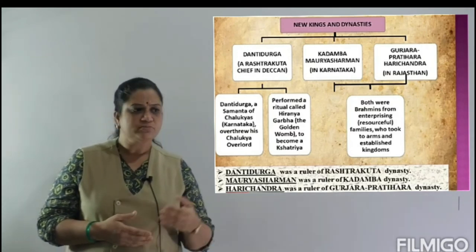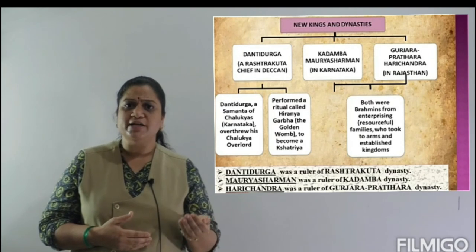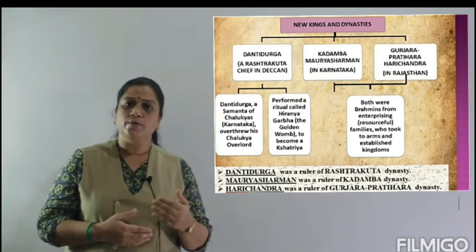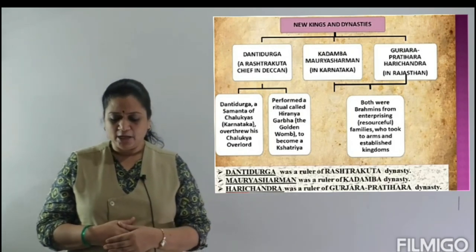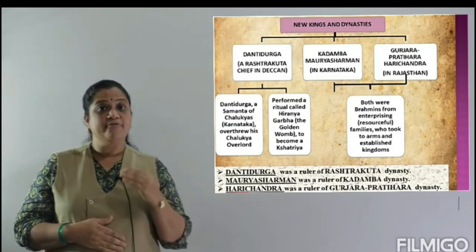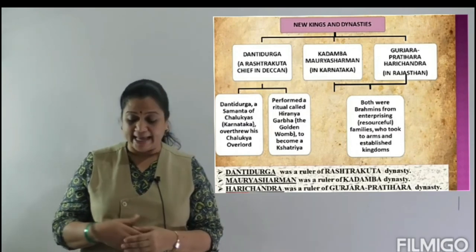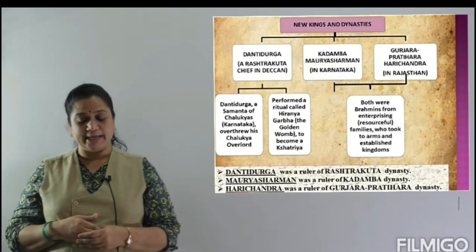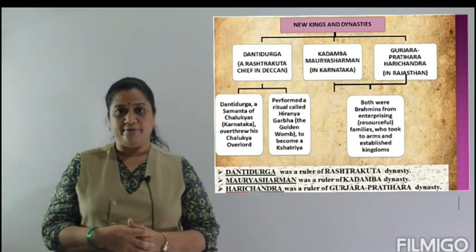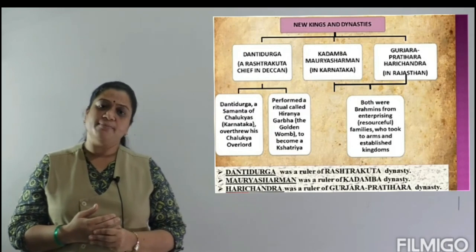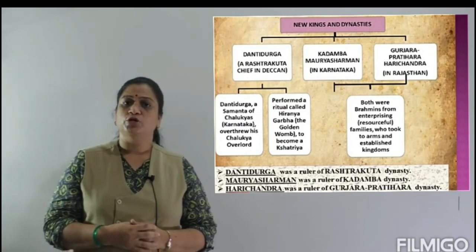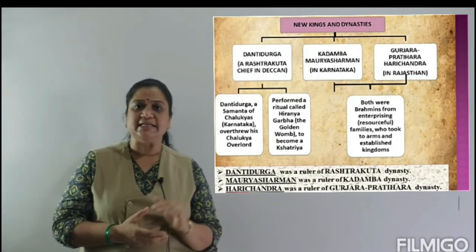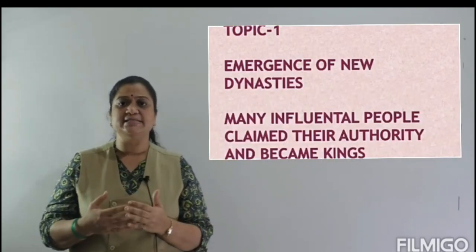We have examples of Vaishyas — traders — and even Brahmanas who ruled kingdoms. For instance, the Kadamba Mayurasharman and the Gurjara-Pratiharas were Brahmanas who gave up their traditional professions and established kingdoms in Karnataka and Rajasthan respectively. After the 7th century, in the medieval period, many new dynasties emerged. Today we have covered the first topic: the emergence of new dynasties and how they emerged in the Indian subcontinent. Thank you.